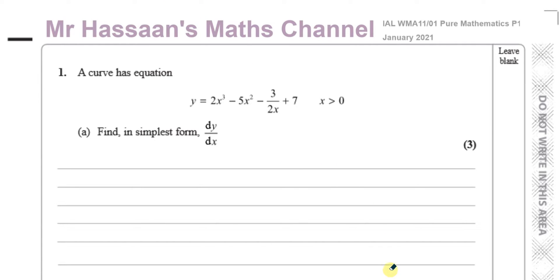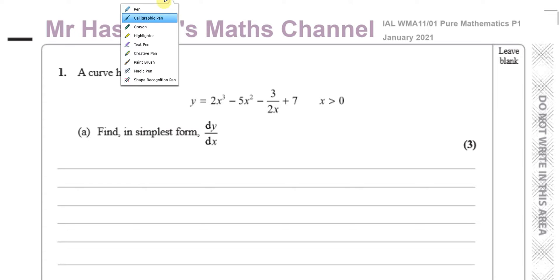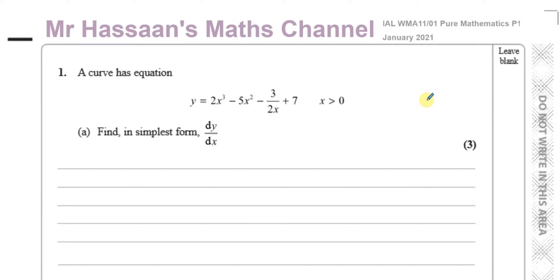So let's start with question number one. We're told that a curve has equation y equals 2x³ minus 5x² minus 3 over 2x plus 7, and x must be greater than zero, otherwise it will be undefined. Find in its simplest form dy/dx. I have to make sure it's ready to be differentiated — one of the terms will have to be modified because x is in the denominator and it must be in the numerator.